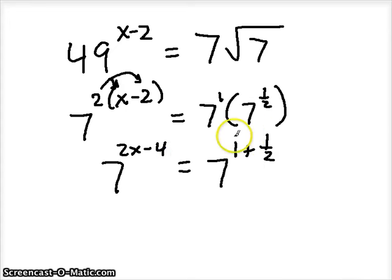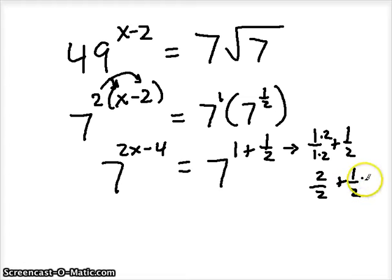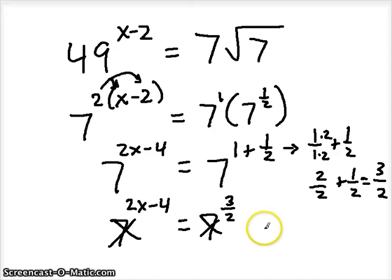How are we going to add this fraction over here on the right? Remember that we need common denominators. So this is really 1 over 1 plus one half, and we need to make this a 2. So multiply top and bottom by 2. So really we have 2 over 2 plus one half, and that gives us three halves. Add the numerators, keep the denominator the same. So we have 7 to the 3 halves on the right side now, and on the left side we still have 2x minus 4. Ignore our bases and try and solve this equation. 2x minus 4 equals 3 halves.